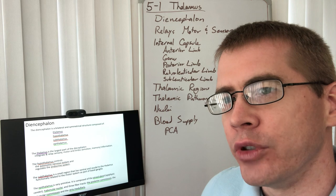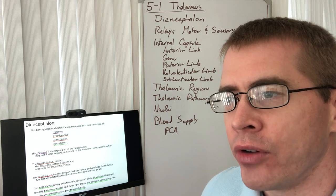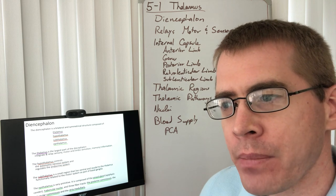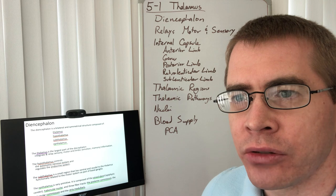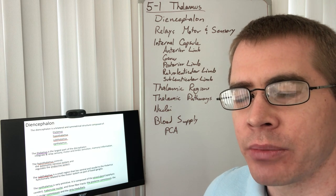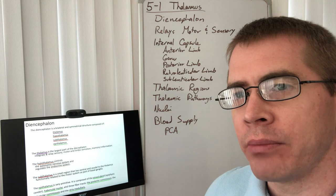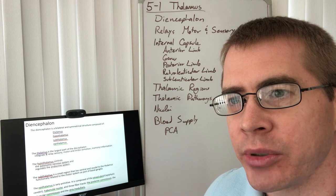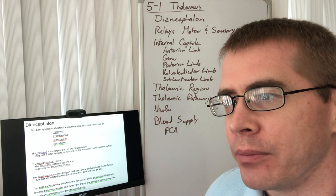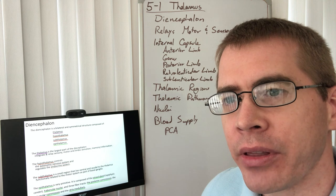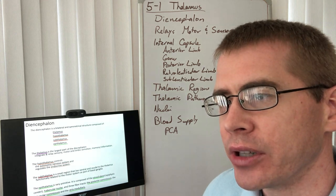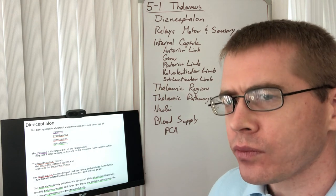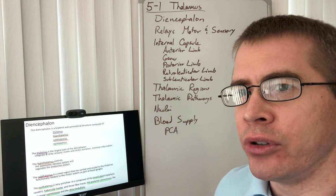Moving on, the epithalamus is involved in emotional regulation and some of the motor output aspects of emotional regulation. It also contains the pineal gland, which is responsible for producing melatonin, which helps us go to sleep and stay asleep, regulating our sleep cycles. The subthalamus, again, is part of the basal ganglia, so it's involved in controlling motor output. We'll talk about the basal ganglia in a few lectures.